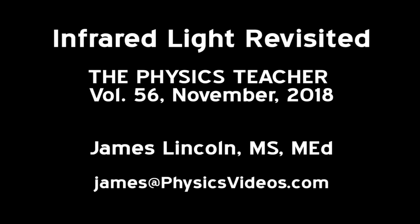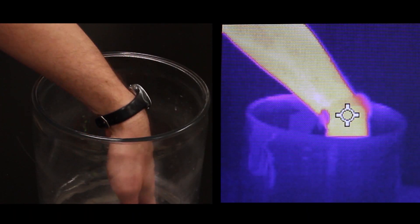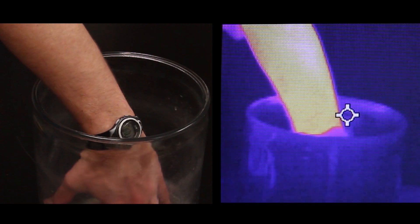This is a video abstract for the article Infrared Revisited. One of the problems with working with far infrared light is that normally glass is opaque to it.